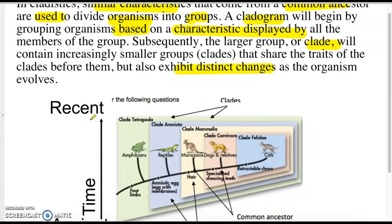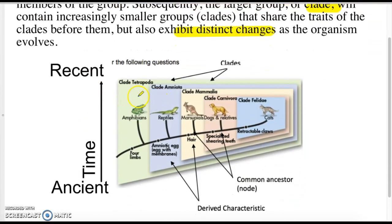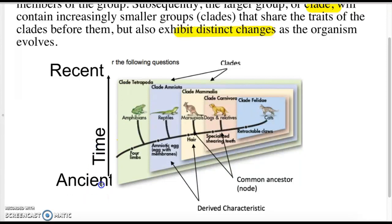This cladogram picture is on page 25. I want you to add this line next to it and draw an arrow going up, and identify this line as time. Down at the bottom would be the most ancient time, and the top of the arrow would be most recent.